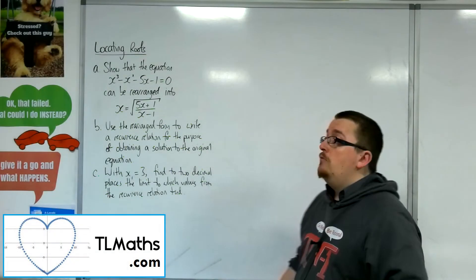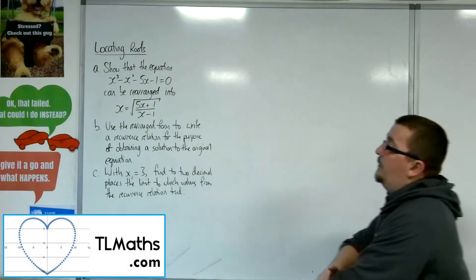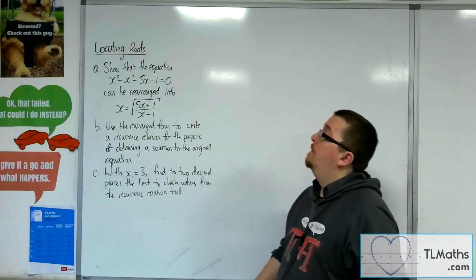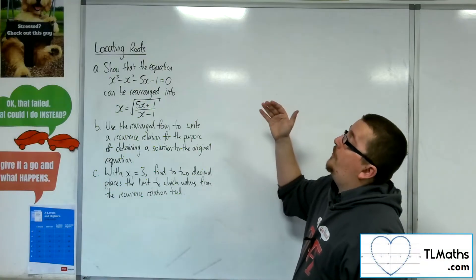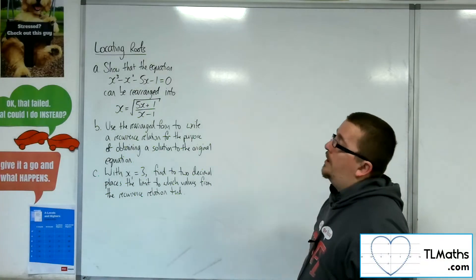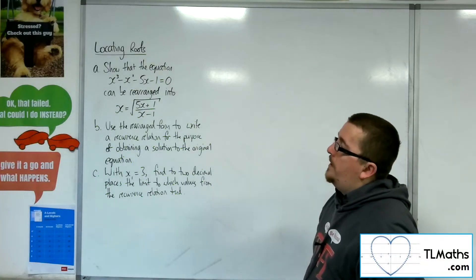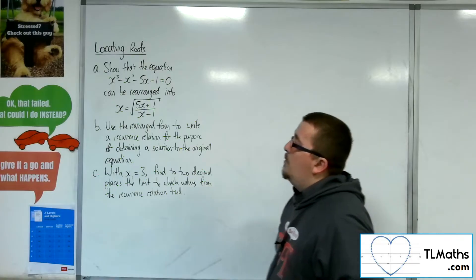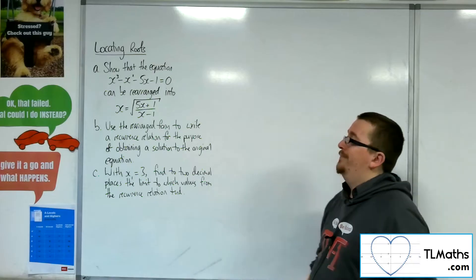In this video, we're going to go through an example of using the x equals g of x method. We're going to start off with this cubic equation: x cubed take away x squared, take away 5x, take away 1 equals 0. And we want to show that it can be rearranged into this format.